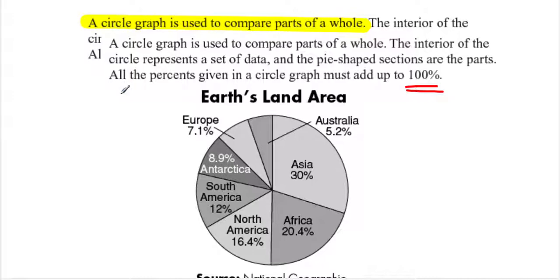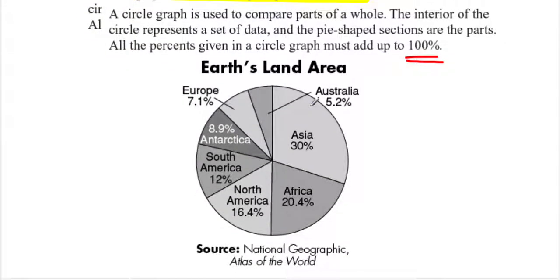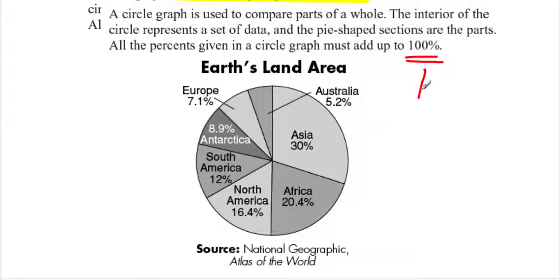Let's take a look at this example — the earth's land area, gathered from the National Geographic Atlas of the World. Europe is 7.1%, Australia 5.2%, Asia 30%, South America 12%, North America 16.4%, and Africa 20.4%. Asia encompasses most of the earth's land area, followed by Africa and then North America. All these percentages should equal 100%.